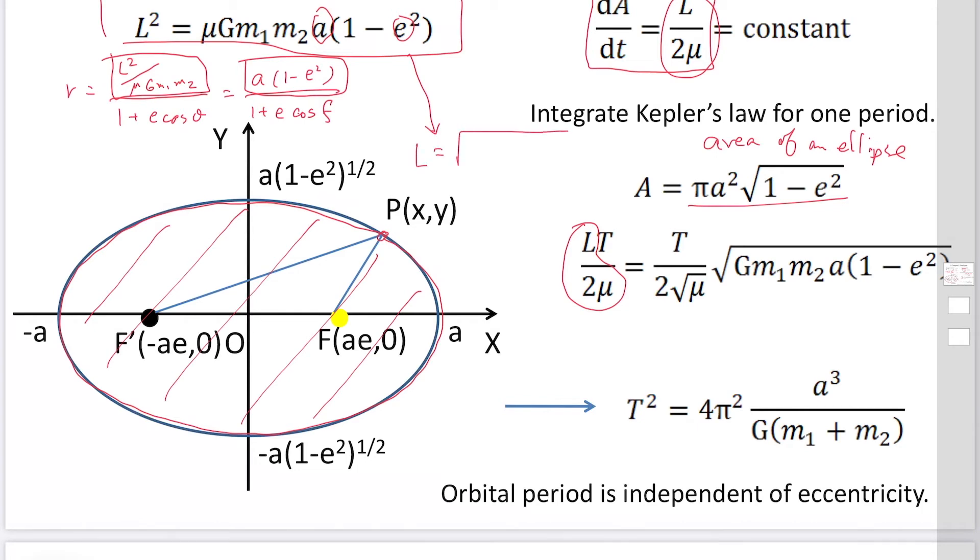It is √(μGm₁m₂a(1 - e²)). You can just substitute this quantity here. Then you will get this equation.